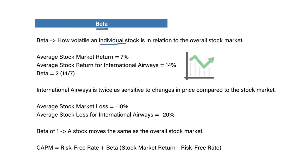Beta is how volatile an individual company stock is in relation to the overall stock market. Let's say we have an average stock market return of 7%, but a company stock for International Airways is 14%. That means this company on average moves twice as much as the stock market. This may look great, but the same occurs if it's a loss — if the stock market were to lose 10%, this stock would lose 20%. Beta is all about how volatile an individual stock is in comparison to the overall stock market.